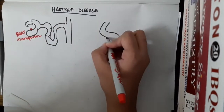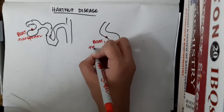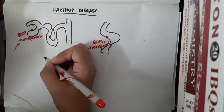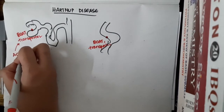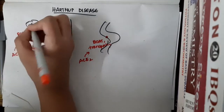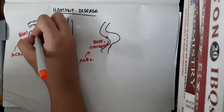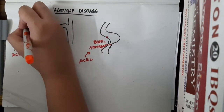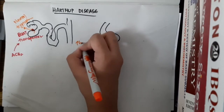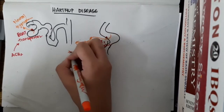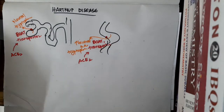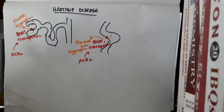This BO81 transporter is present both in the kidneys and intestine, and it is coded by the gene ACE2. This BO81 transporter helps in the reabsorption of tryptophan and other neutral amino acids from the kidney and the intestine.